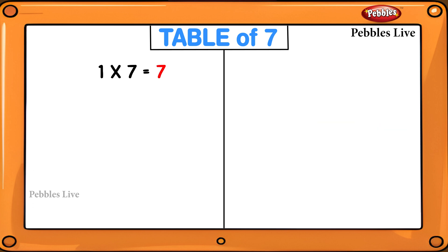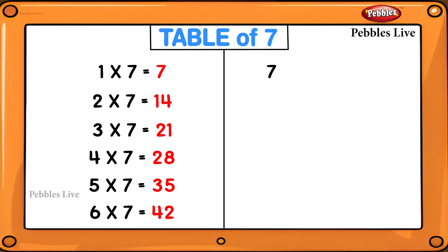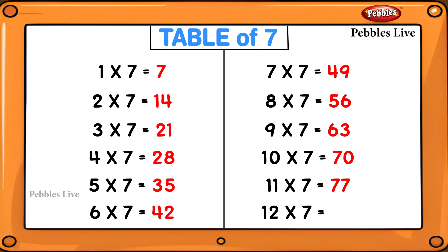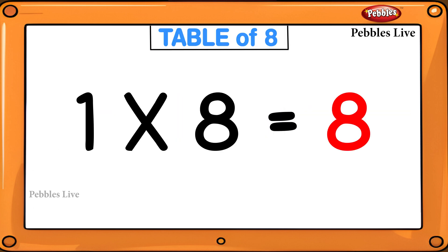1 seven is 7, 2 sevens are 14, 3 sevens are 21, 4 sevens are 28, 5 sevens are 35, 6 sevens are 42, 7 sevens are 49, 8 sevens are 56, 9 sevens are 63, 10 sevens are 70, 11 sevens are 77, 12 sevens are 84. Table of 8.